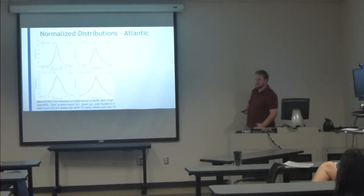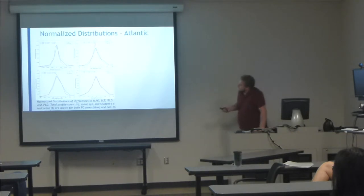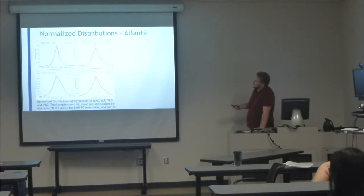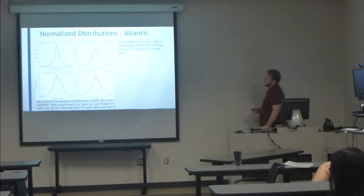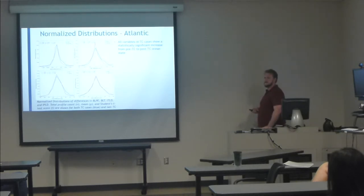I've taken BLPE calculations and subtracted the post-TC profile minus the pre-TC profile to see how the barrier layer potential energy is changing as the TC goes by. The upper left panel shows the BLPE calculation with count, number of cases, mean, and T-score. Upper right is barrier layer thickness, lower left is isopycnal layer depth, and lower right is isothermal layer depth. All variables for the Atlantic basin show a statistically significant increase at the 95% level from pre-TC to post-TC. So the potential energy is increasing as the TC goes by, which is counterintuitive — you'd expect strong forcing to induce mixing and erode any pre-existing barrier layer.